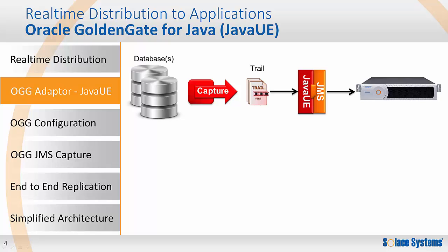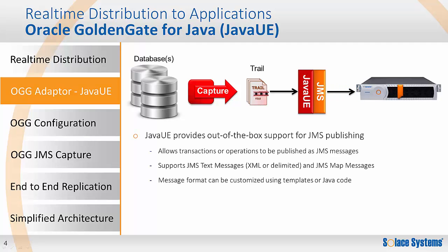The JMS plugin handler will convert the event into a JMS message and send the message to the SOLUS message router. What's nice about the Oracle GoldenGate for Java product is that it supports JMS publishing out of the box, and it has nice configuration flexibility to control how the messages are sent. For example, messages can be sent once per transaction or once per operation. The format of the message can be customized to be a JMS text message with XML or a JMS map message.